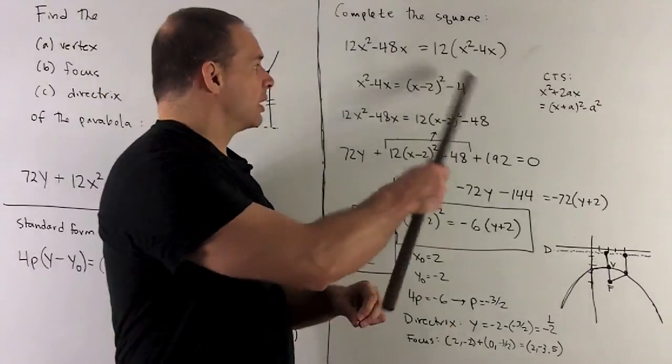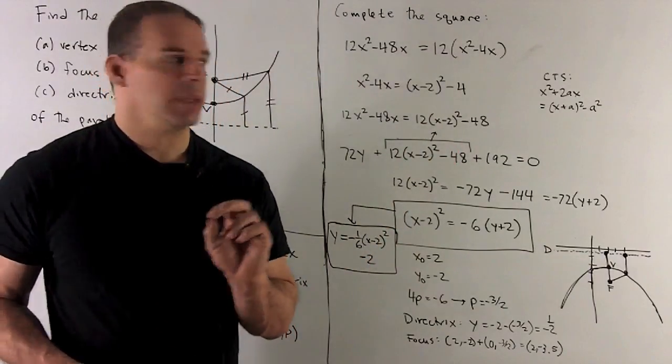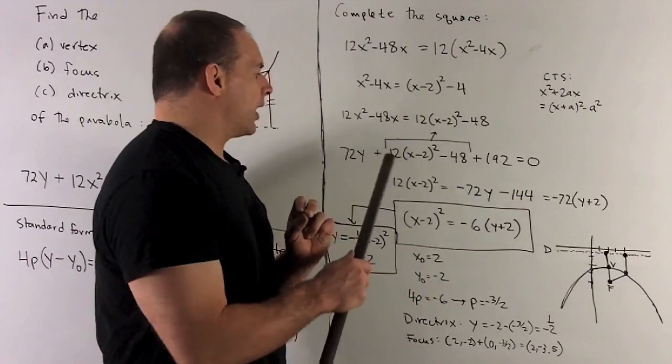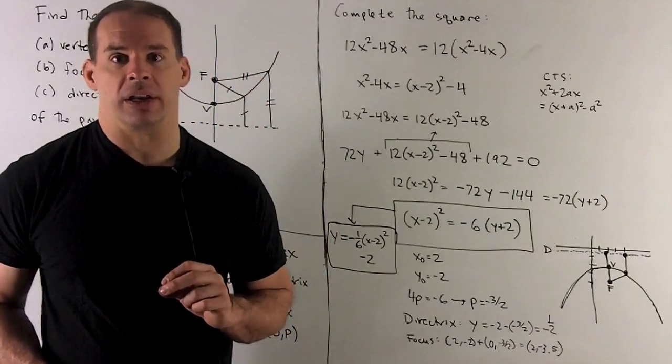All right, I'm going to take this, put it back into here, push the 12 through. What happens then is, put it back into the original equation, and now I can start isolating the term that has the (X - 2)² in it.